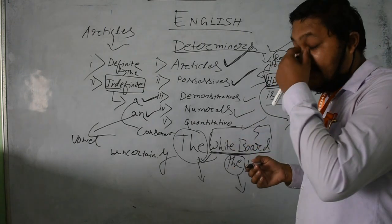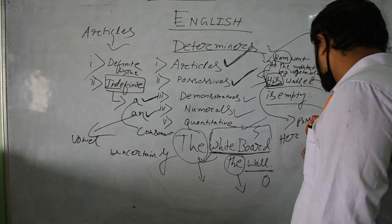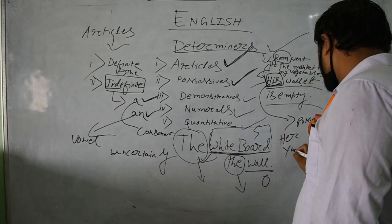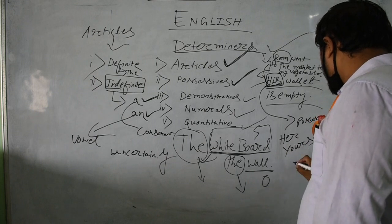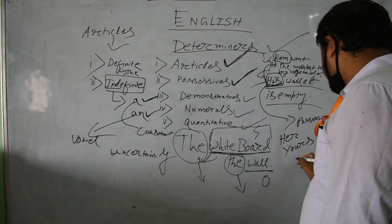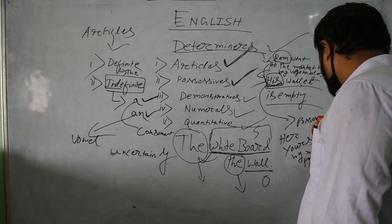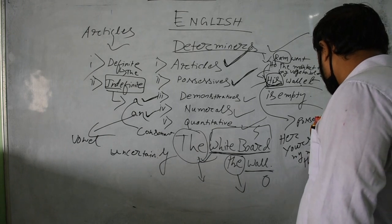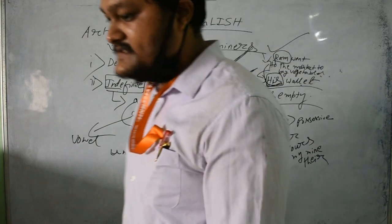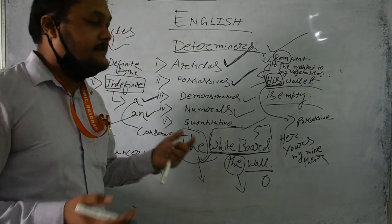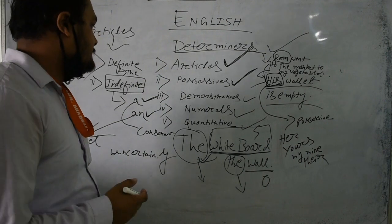There are other kinds of possessives: his, her, your, my, their — these are all possessives which indicate the possession of the noun. So we are clear with possessives.